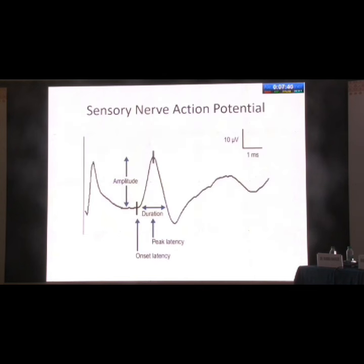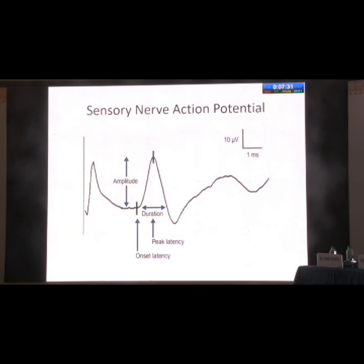In brachial plexus injury, medial and lateral antebrachial cutaneous nerves are also important for differential diagnosis. In the lower limb we study superficial peroneal and sural nerves. A typical sensory nerve action potential shows amplitude, distal latency, and dividing distance by distal latency gives conduction velocity. Regarding applications: if you stimulate the median nerve from the index finger and record SNAP, the trunk involved is upper and the cord involved is lateral, and the lateral antebrachial cutaneous nerve has similar distribution.